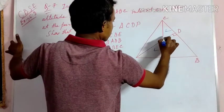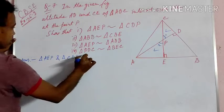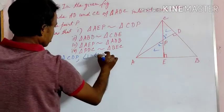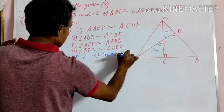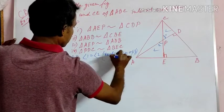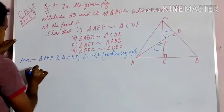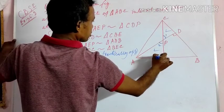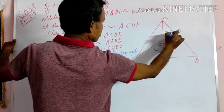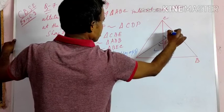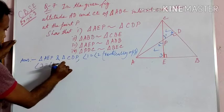In triangle AEP and triangle CDP, consider two angles. Angle 1 and angle 2 are vertically opposite angles, so angle 1 is equal to angle 2. Also, angle 3 and angle 4 are both equal to 90 degrees, as given.